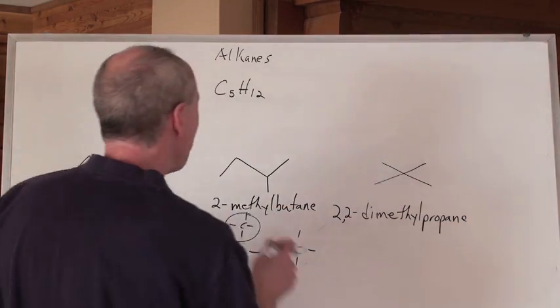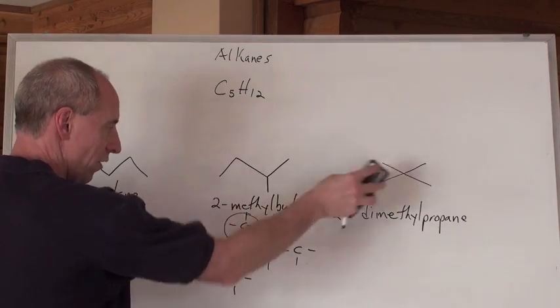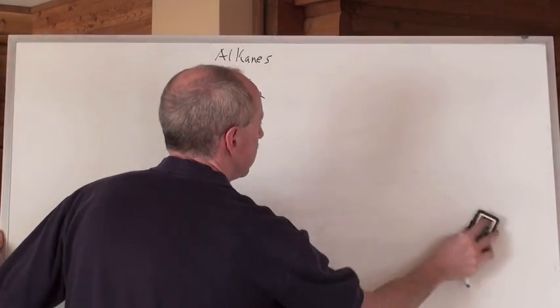So those are the three isomers that you can draw for C5H12 and various ways that you can actually represent those formulae. And that's the formulae. Thank you.